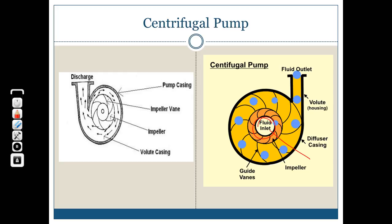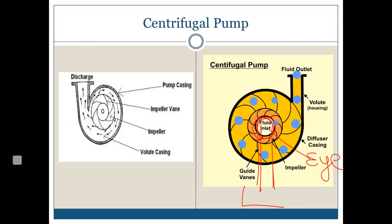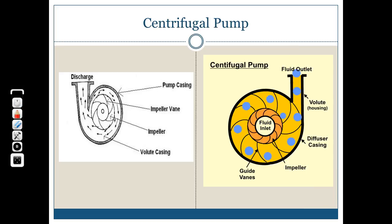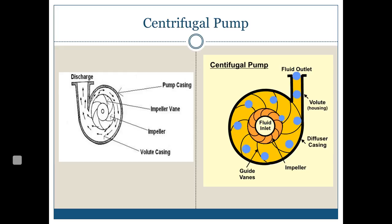At the eye of the impeller, negative pressure is created — that is the suction. Assuming we have a sump with a suction pipe and a source of water, the negative pressure at the eye of the impeller sucks the water from the sump or reservoir. Because of the shape of the diffuser casing and the impeller, that water is guided and discharged at the required height — the desired pressure head and velocity. This centrifugal action between the eye of the impeller and the diffuser casing provides the pumping action, hence the name centrifugal pump.